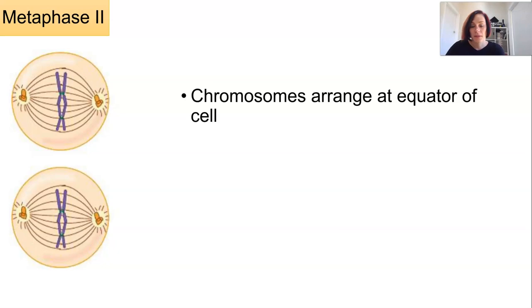The chromosomes arrange themselves at the equator, so down the middle of the cell with help from the spindle fibres. It's just that it's happening in two cells this time.